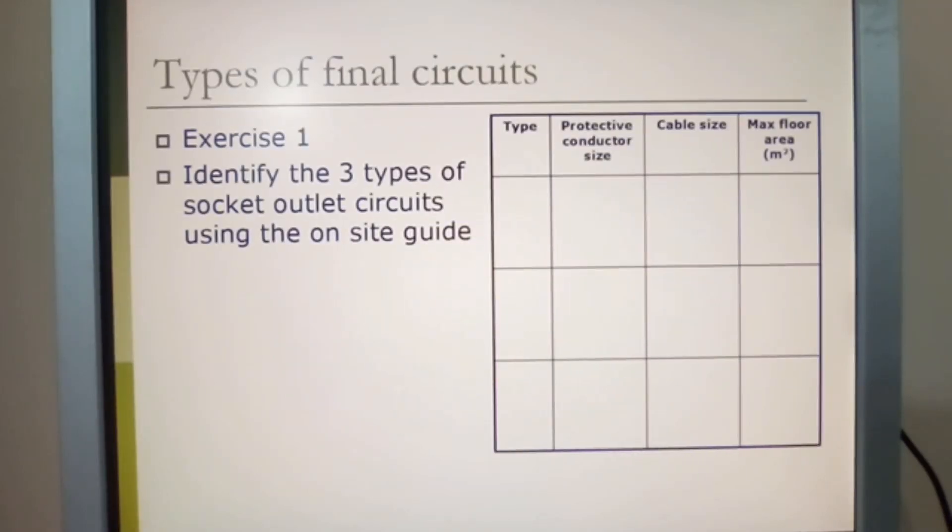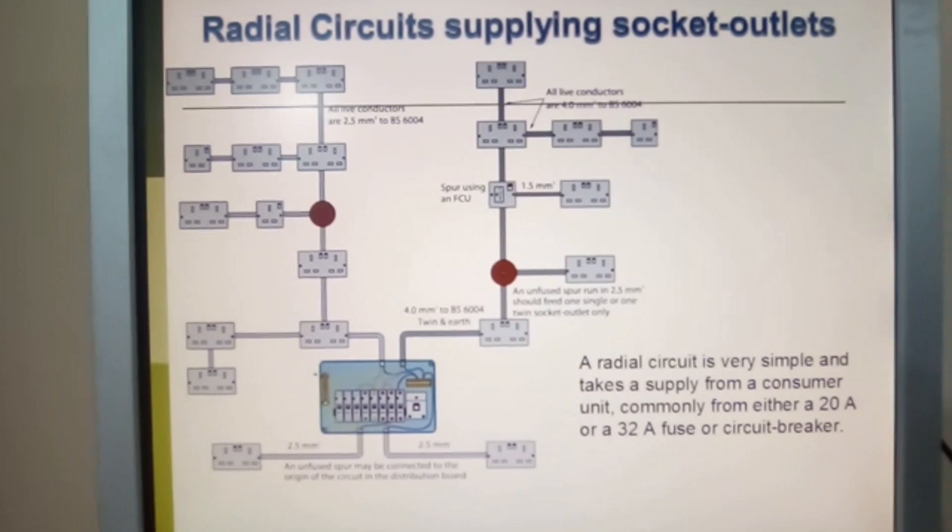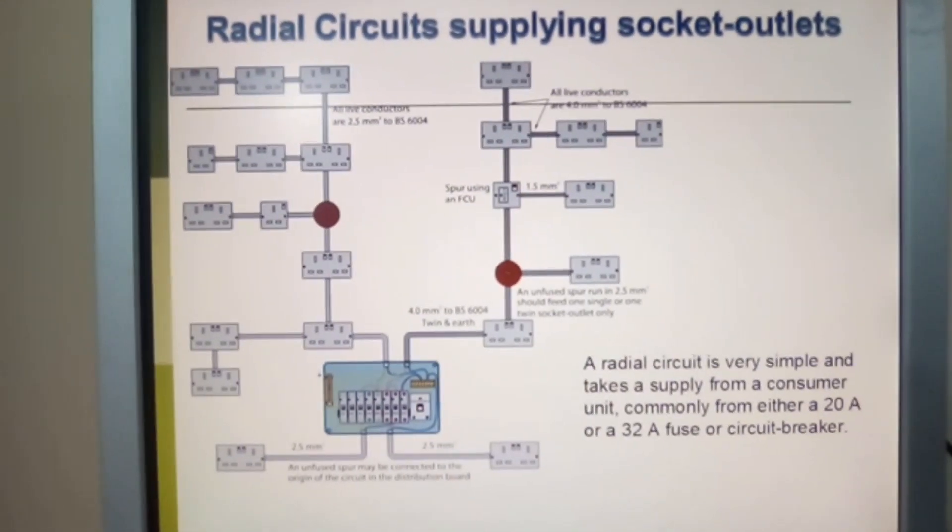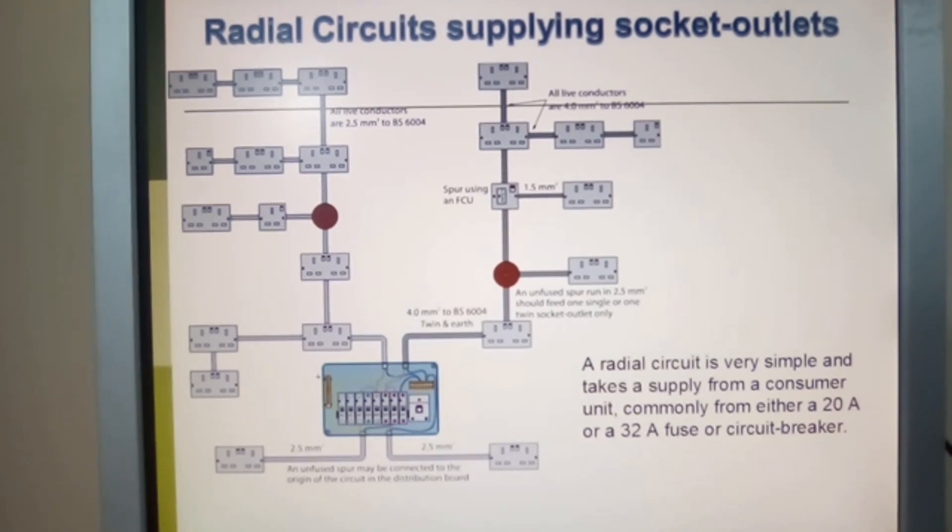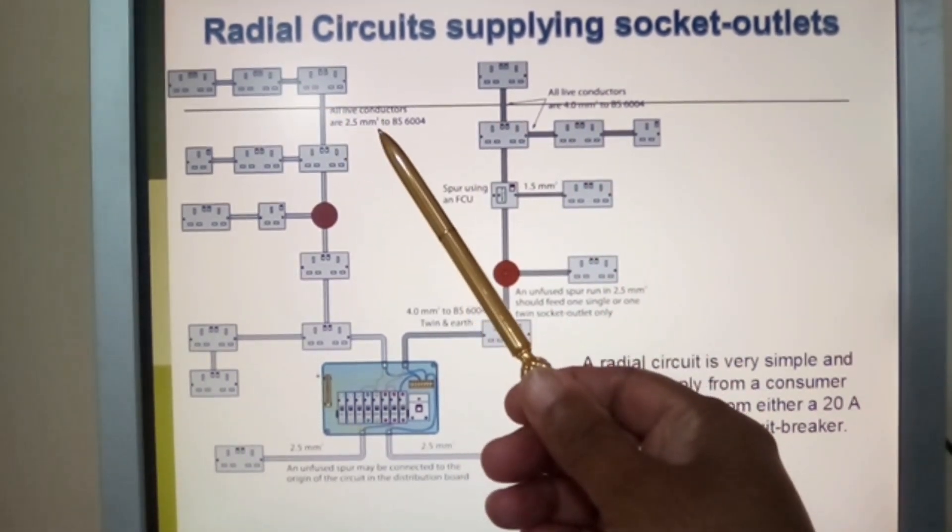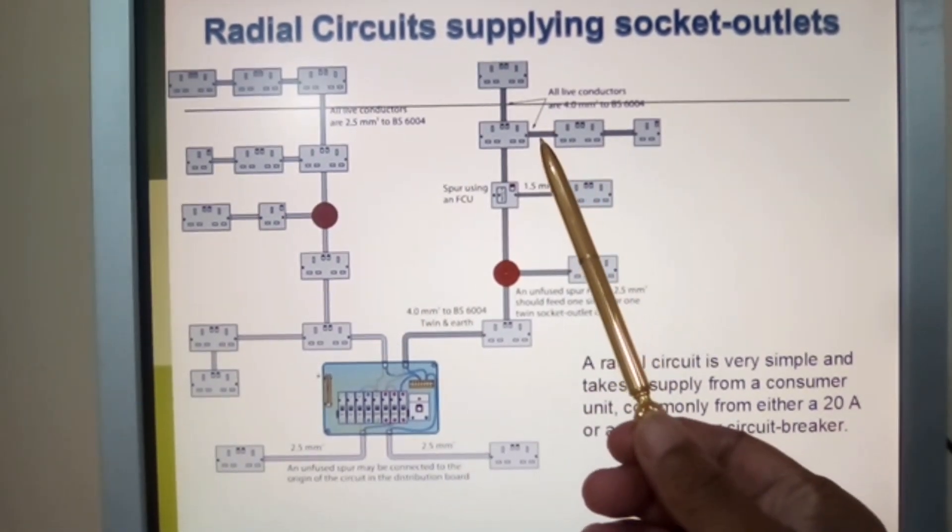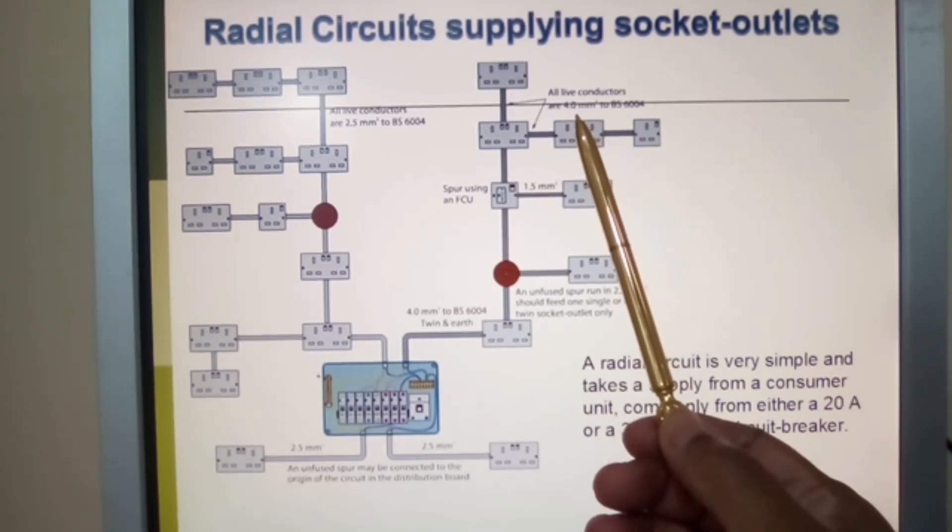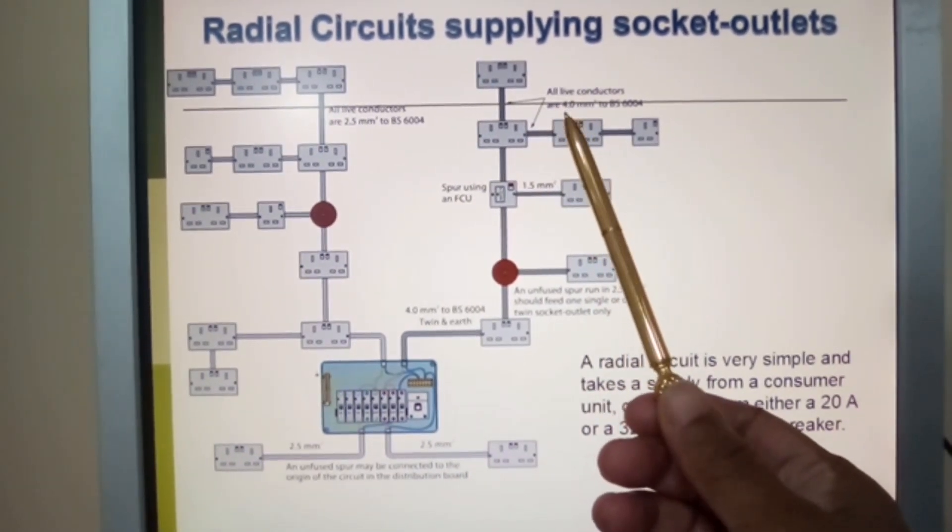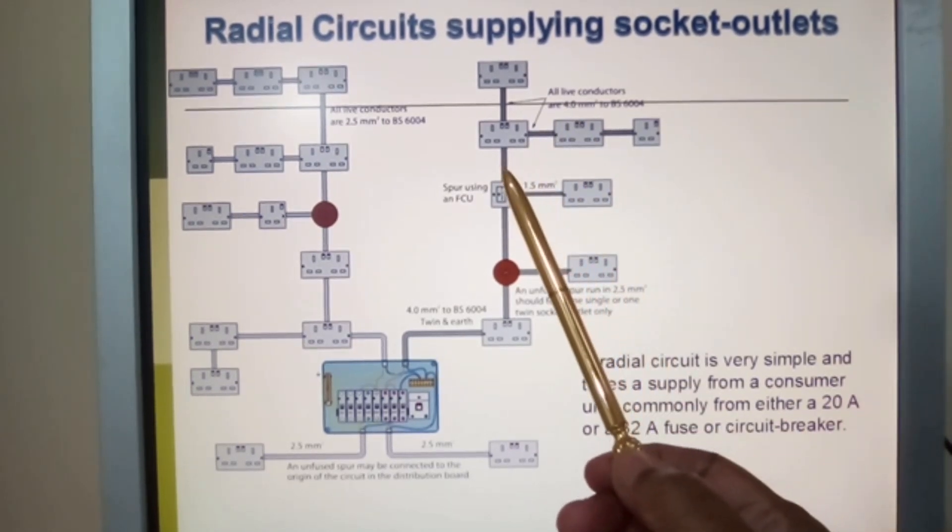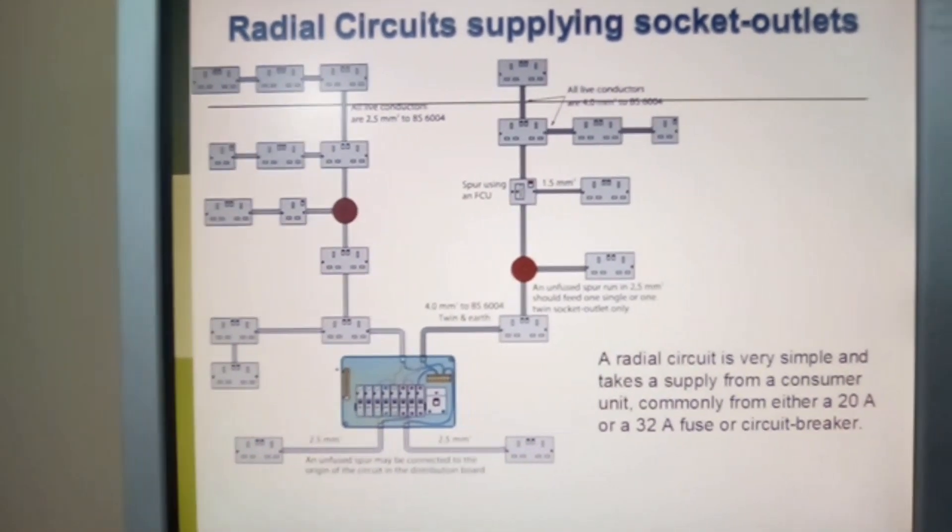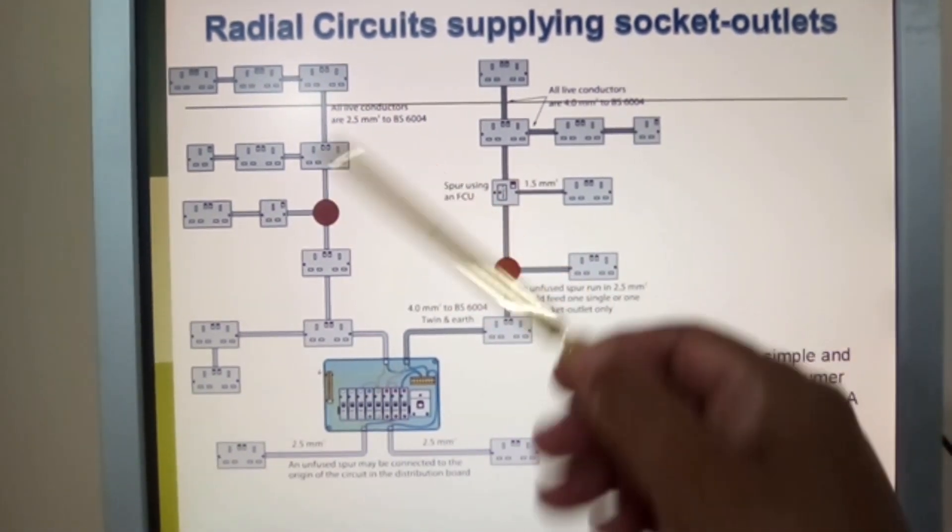Here is your domestic radial circuit supplying socket outlets. You can have a variation of cables here. They have chosen to use four millimeters, but we use 2.5 millimeter cable which is standard here in the UK. They may have used four millimeters depending on what load they're going to be feeding, and in parts of the world they do use four millimeters to ensure maximum allowable voltage drop over a given distance.